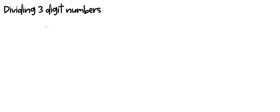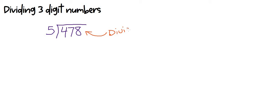Today we're going to review dividing three-digit numbers. Before we begin, let's review some important vocabulary words. We have a division problem right here, and the number inside this box is called the dividend. The number going into the dividend is called the divisor. The dividend is the number that's going to be divided, and the divisor is the number that's going to go into the dividend.